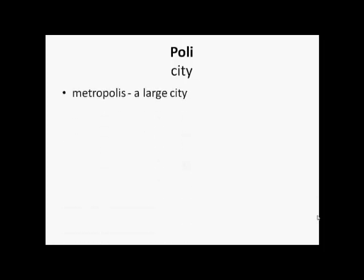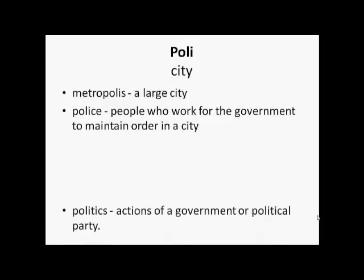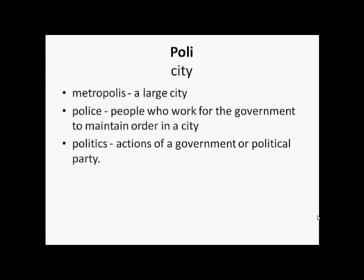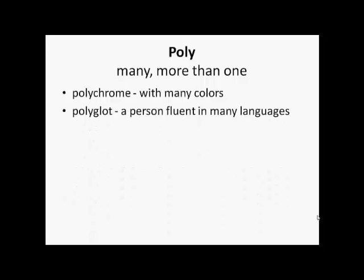'Poli' means city. So metropolis is a large city. Police are the people who work for the government to maintain order in a city. Politics means actions of a government or political party. 'Poly' with a Y means many or more than one — so polychrome means with many colors, polyglot is a person fluent in many languages, and polygon is a shape with three or more straight sides.